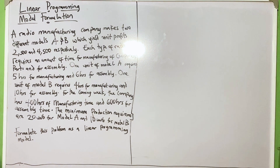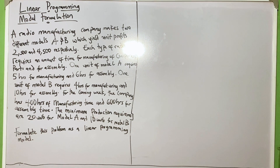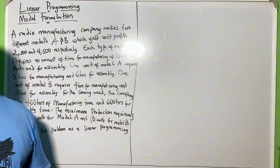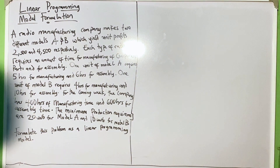Hello guys. In this video we are going to demonstrate how to formulate linear programming problems from a raw question. As we have mentioned earlier, a linear programming model comprises three different distinct parts that work together: one, the objective function; two, a set of structural constraints; and of course, the non-negativity constraints.